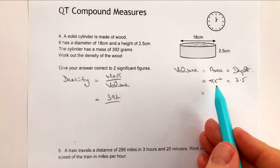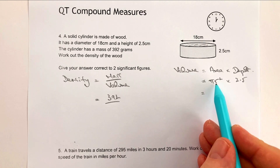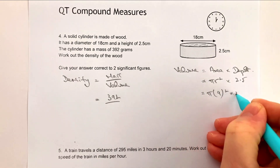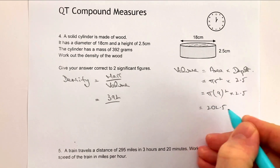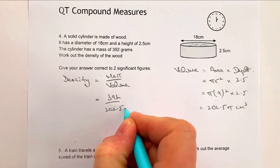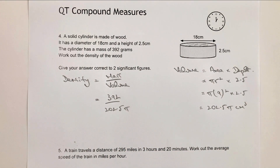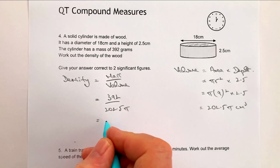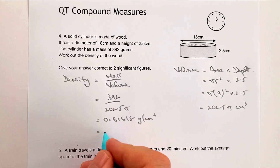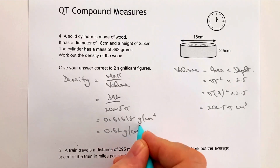The diameter given is 18, so the radius is 9. Therefore the volume is pi times 9 squared times 2.5, which works out to 202.5π centimeters cubed. Putting that into the density formula — 392 divided by 202.5π — gives 0.61618 grams per centimeter cubed, which to two significant figures is 0.62 grams per centimeter cubed.